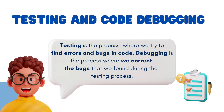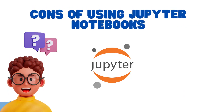Then, we need to test and debug our code. In simple words, testing is the process where we try to find errors and bugs in code, whereas debugging is the process where we correct the bugs found during testing. However, using Jupyter Notebooks in production can't satisfy these requirements.